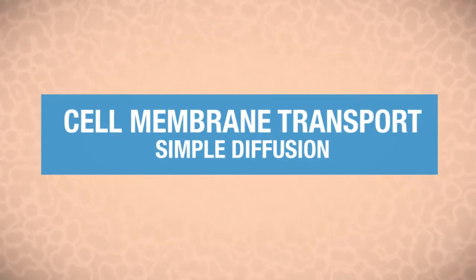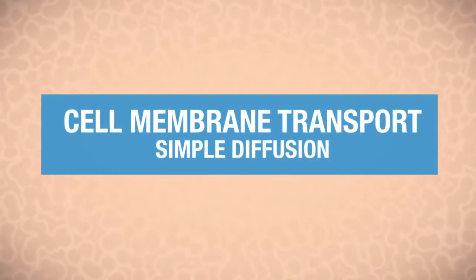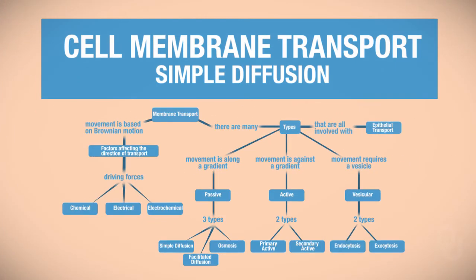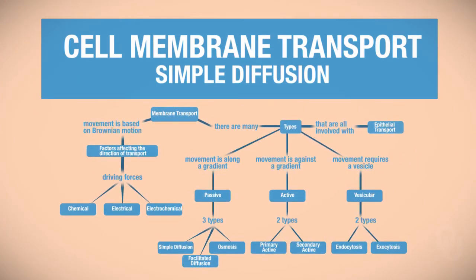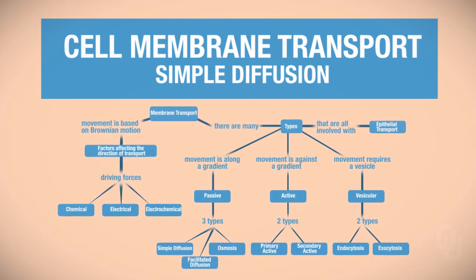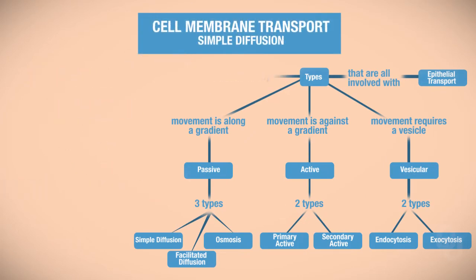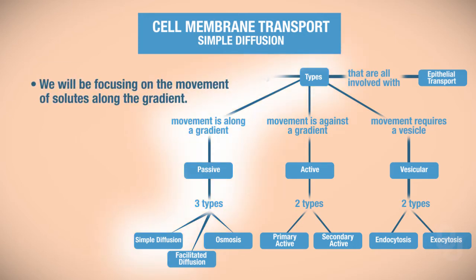In this segment on cell membrane transport, we're going to be focusing on the various types of membrane transport. Specifically in this video, we'll be focusing on simple diffusion. When we look at this outline of membrane transport, we're going to be focusing on movement of solutes that is along a gradient. So these are all types of passive transport, and there are three types. The first type we're going to be discussing is simple diffusion.